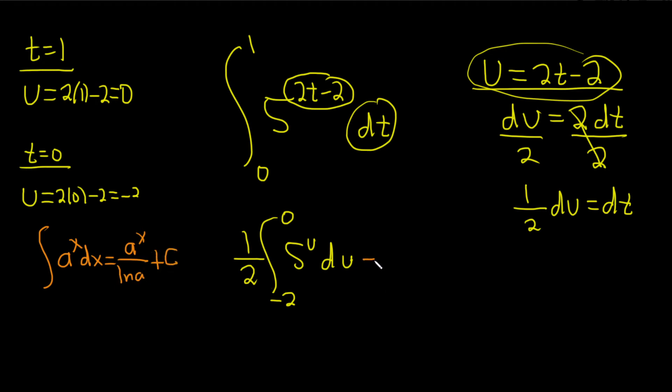So here a is 5. So the 1 half on the outside hangs out. And we get 5 to the u over the natural log of 5. And we don't need the plus c because this is a definite integral. So instead, we'll put a bracket and we have our negative 2 and our 0 here.